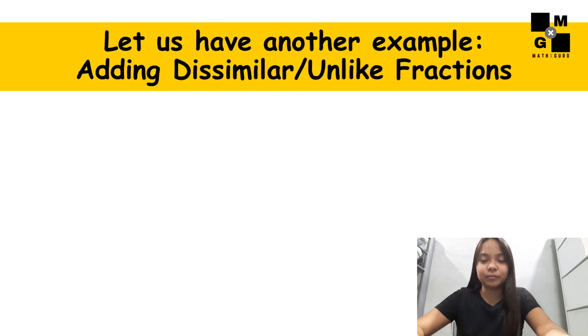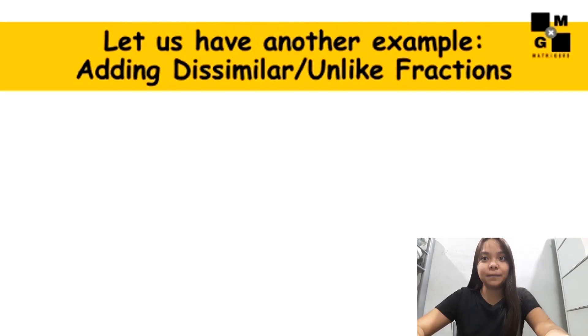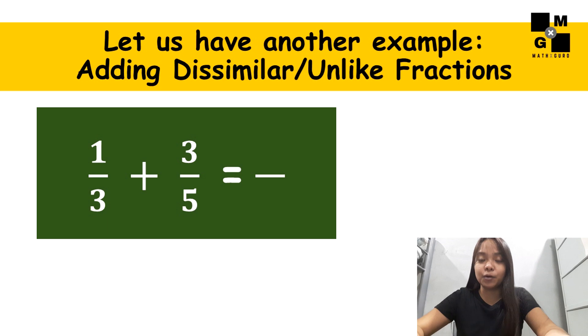Let us have another example. This time, I want you to get a pen and paper and solve it with me. Or, if you can do it mentally, you may do so. What is the sum of one-third and three-fifths? So, following the first step, we must multiply the denominators. Three times five, you will get an answer of fifteen.